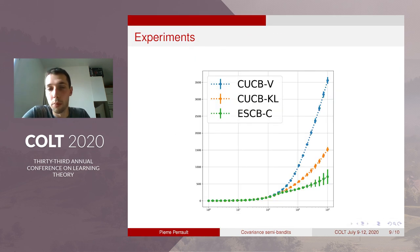So we provide also some experiments. So we compare our algorithm ESCB-C against CUCB-V and CUCB-KL that are the CUCB framework with empirical Bernstein confidence intervals or KL-based confidence intervals. So this comparison is on a problem of maximum assortment.